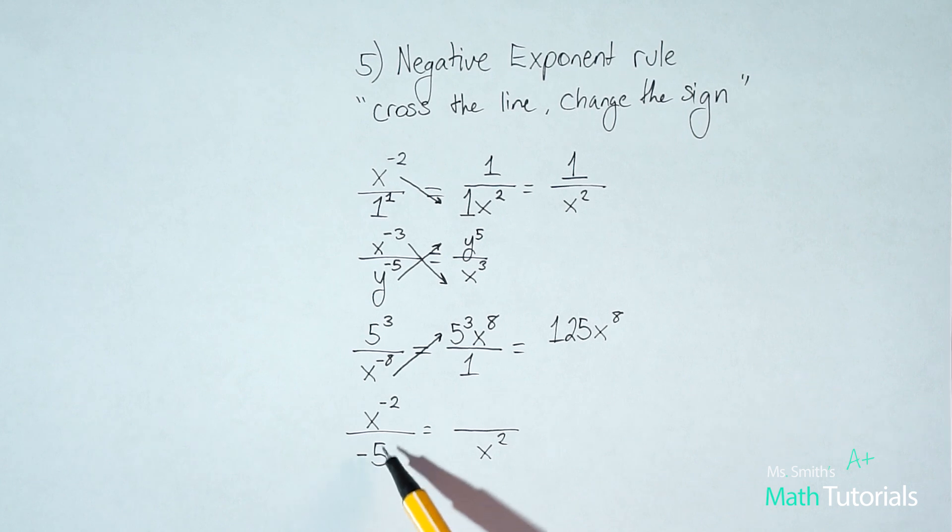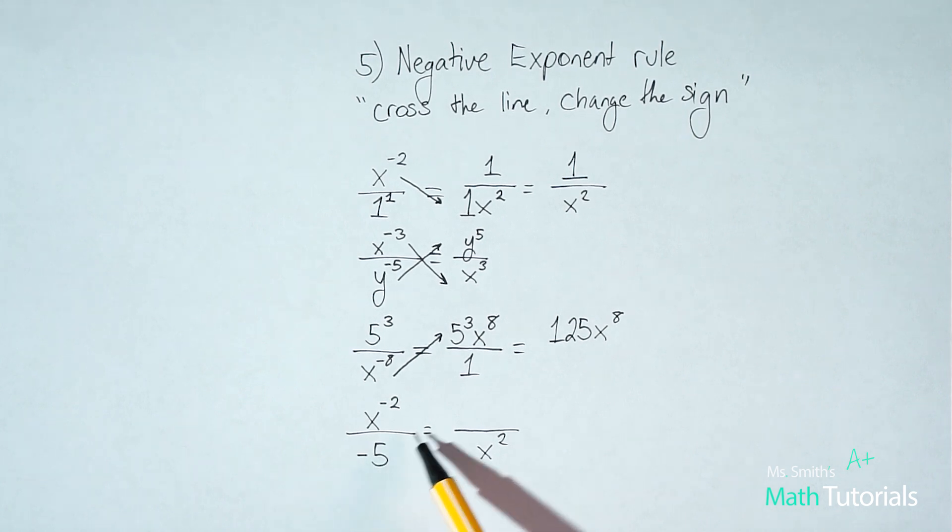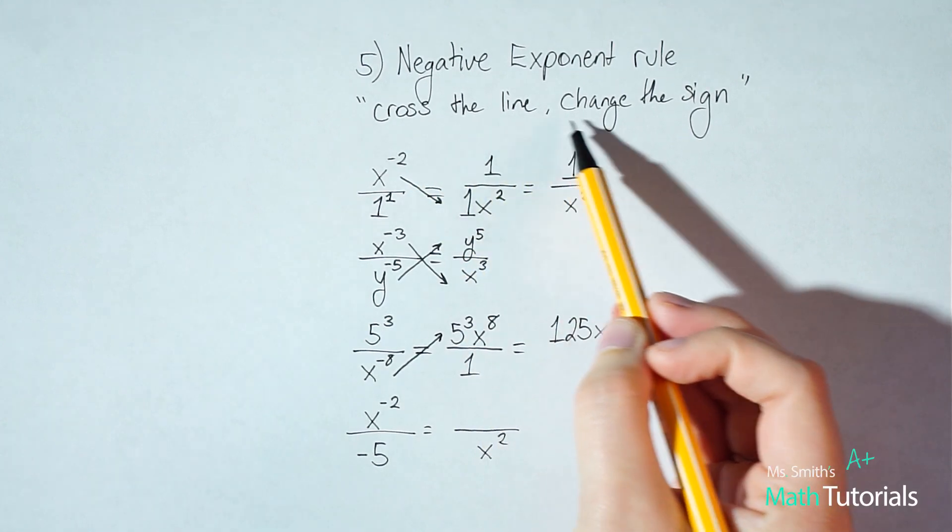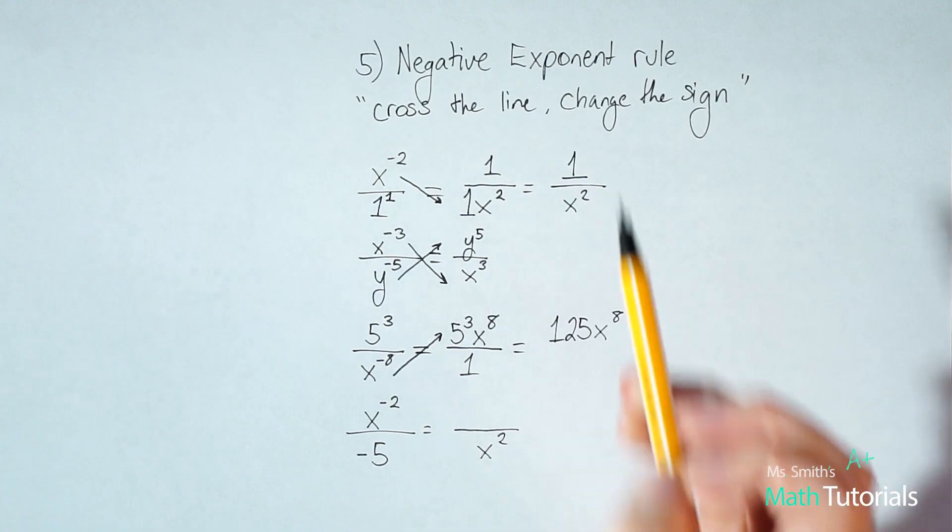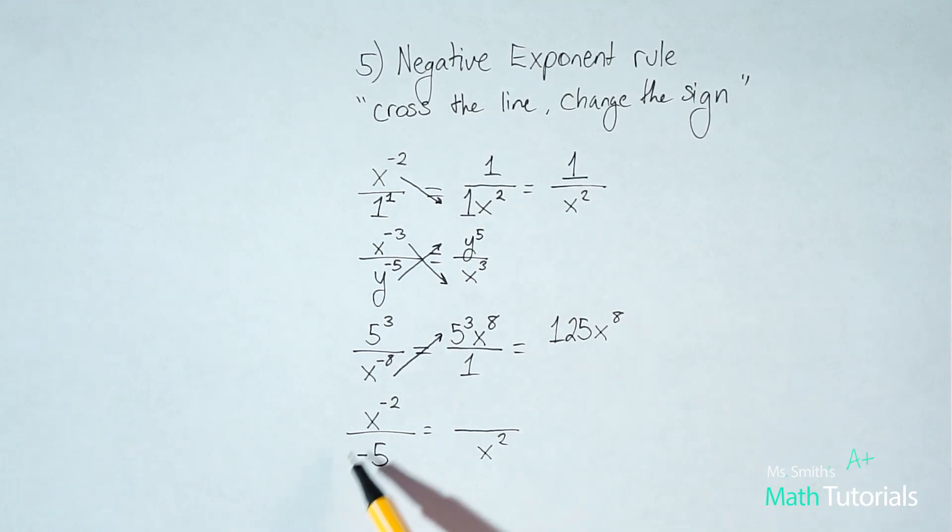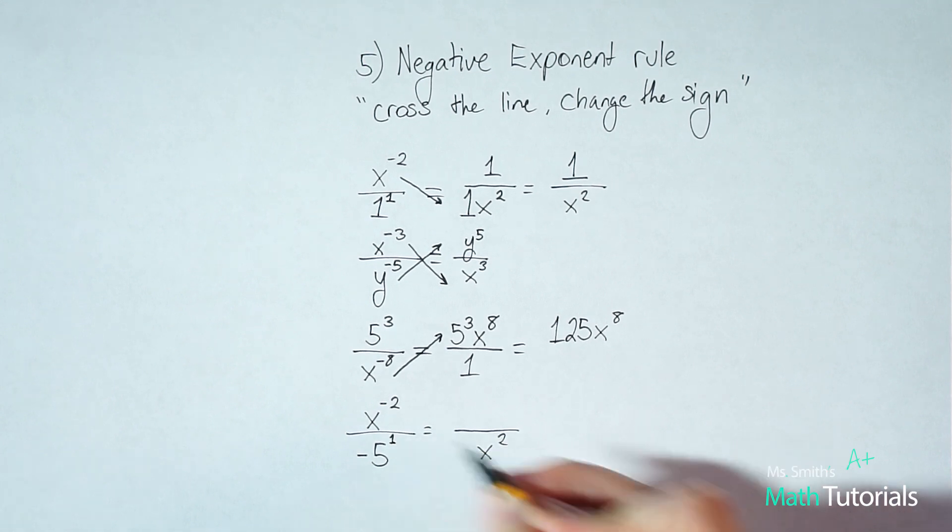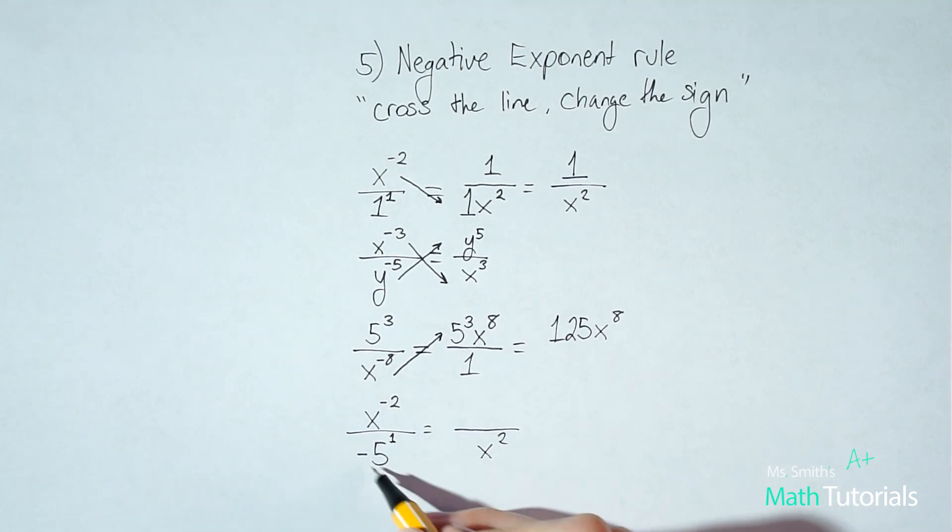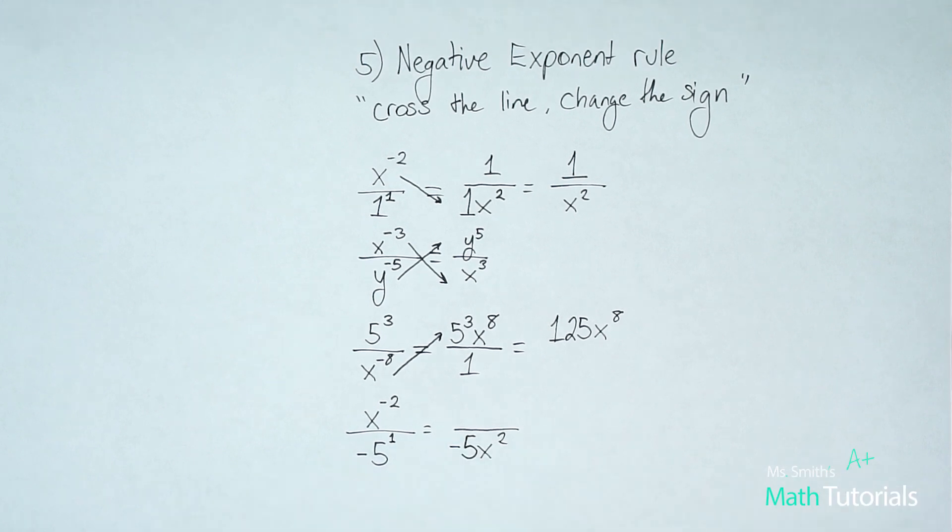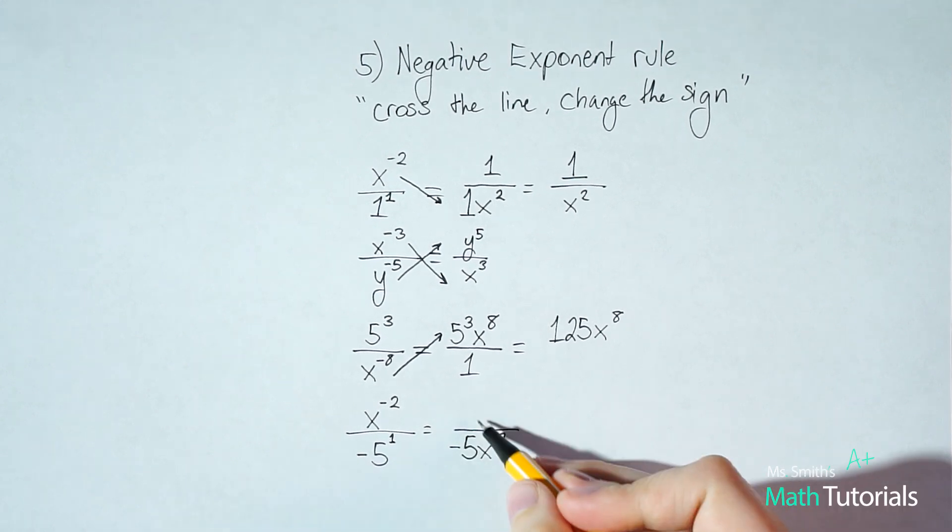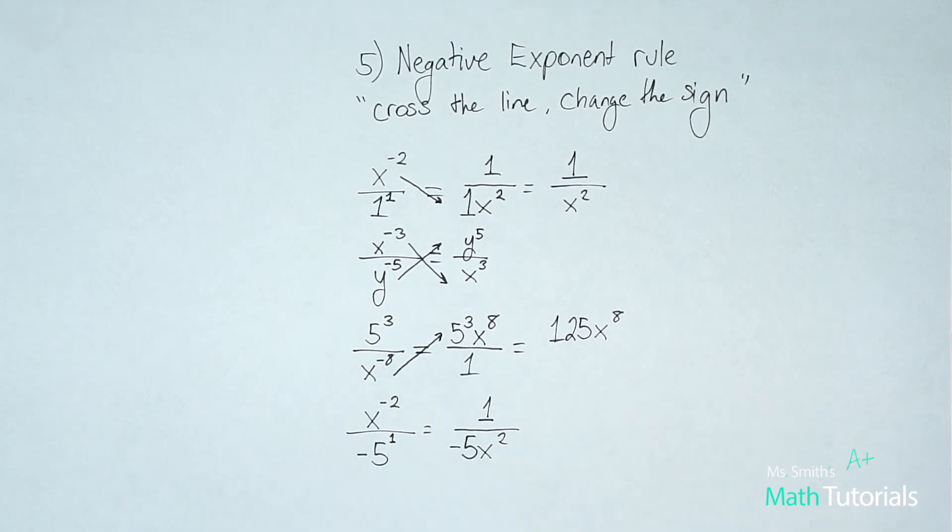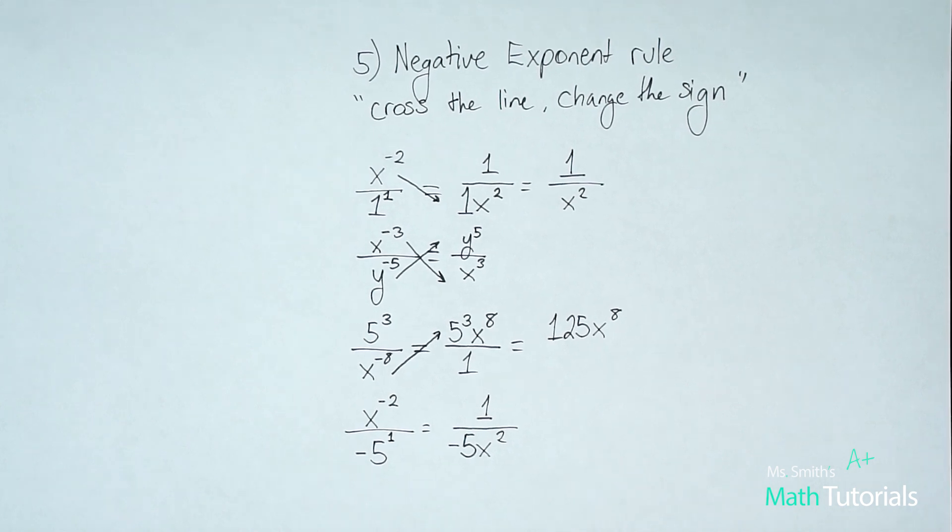But a lot of students see this negative five, and they think, oh, cross the line, change the sign. That should become a positive five. It doesn't work that way. This cross the line, change the sign only applies to negative exponents. So it does not apply to negative whole numbers. So rather, this negative five has an understood exponent of positive one. So in fact, it's good right where it is at the bottom. We do not need to move that. We've got a placeholder up here of one. So that is the negative exponent rule.